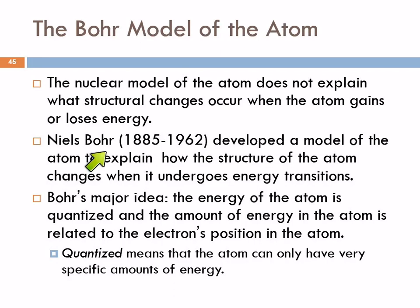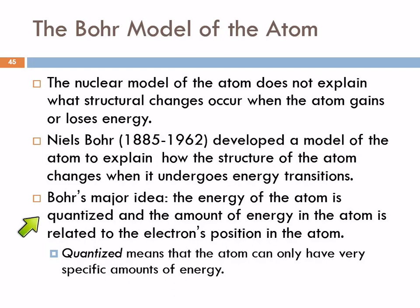Niels Bohr developed a model that explained how the structure of the atom changes during energy transitions. The Bohr model is great in some aspects, but we'll find out it's not entirely correct. His major idea was that the energy of the atom is quantized — there are specific levels. The atom can only have very specific amounts of energy, and that energy is related to the electron's position in the atom.